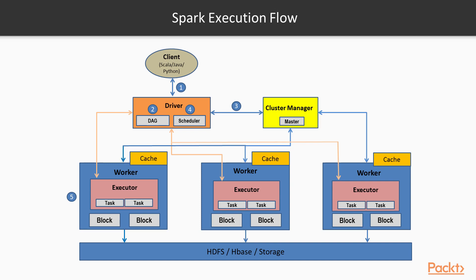Once the whole data is processed, results are reported back to the driver. Every Spark application gets its own set of executors on the worker nodes. The advantage of this approach is that tasks from different applications are isolated from each other since they run in different JVM processes, making scheduling of tasks easier. However, applications cannot share data without writing it to disk even if they are running on the same worker node, and sharing data through disk will cause performance issues.